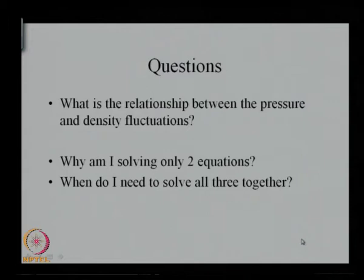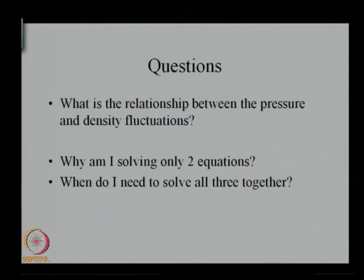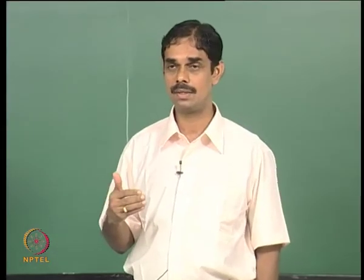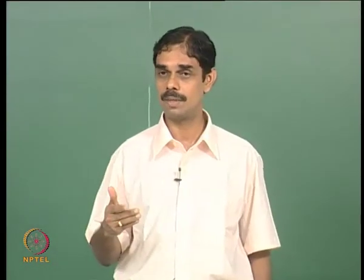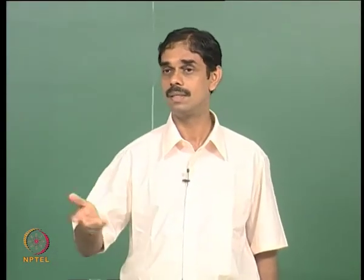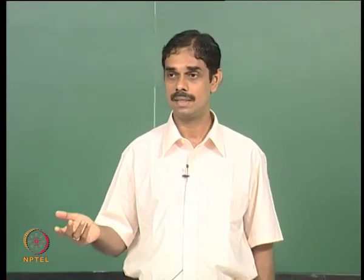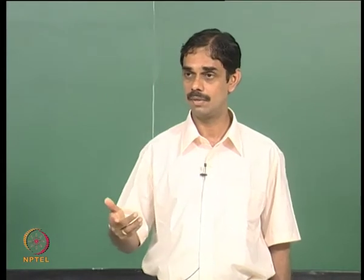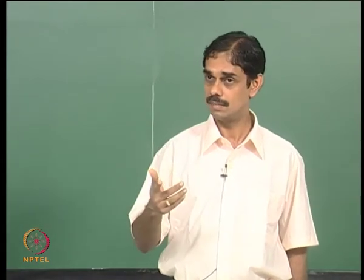I stopped last class with some questions. The first question was: what is the relationship between pressure and density fluctuations? We worked it out and the answer was that p-prime is not exactly rho-prime times c-squared, but there is a correction term. We worked that out last time.